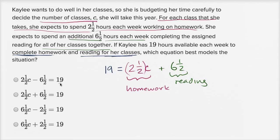So which of these choices matches what I just wrote? They have the 19 on the other side, but let's see — 2½C plus 6½, yep, that's what we have here, is equal to 19. That's this choice. The only difference between this and what I wrote is they just swapped the two sides of the equality, which you can always do.